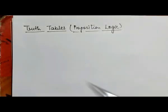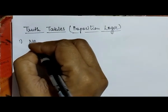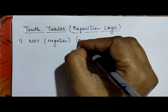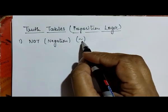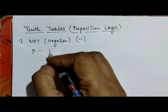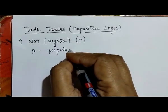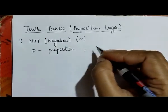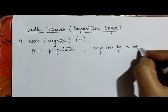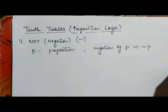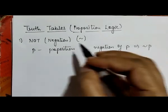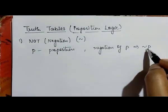The first connective is NOT, which we call negation, and it is shown by the negation symbol. Suppose p is a proposition — the negation of p, denoted by this symbol, is read as 'not p'. This symbol denotes 'not' or negation, so we say negation of p or not p.